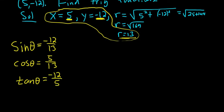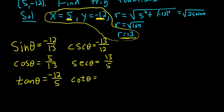To find the reciprocal functions, we just flip these. So the cosecant of theta is negative 13 over 12. Just flip it. The secant of theta is 13 over 5. So we just flip it. And the cotangent of theta is negative 5 over 12. That's it. We just flip it. And that's the final answer.